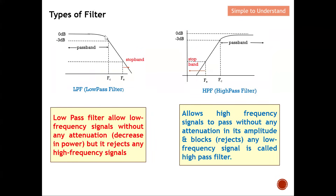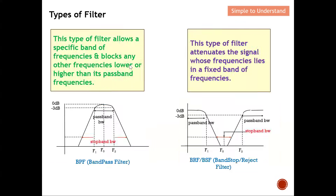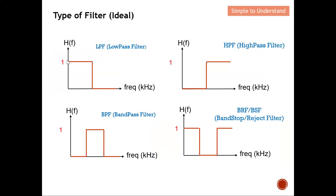What I've been describing is the ideal filter behavior. In a practical filter there will be a transition region between the passband and stopband, whereas for an ideal filter there is no transition — it cuts off instantly. The ideal low pass filter allows only its passband to pass and rejects everything else at that instant. The same applies to ideal high pass, band pass, and band stop filters. In the real practical world there will always be a transition period from passband to stopband.